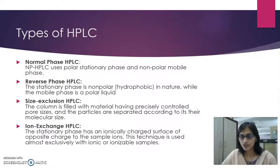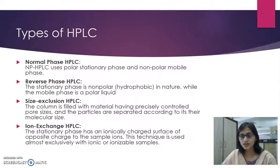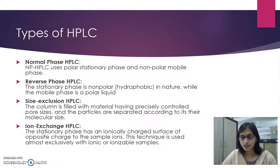In ion exchange HPLC, the stationary phase has an ionically charged surface of opposite charge to the sample ions. This technique is used almost exclusively with ionic or ionizable samples. The stronger the charge on the sample, the stronger it will be attracted to the ionic surface phase and thus the longer it will take to elute. The mobile phase is an aqueous buffer where both pH and ionic strength are used to control elution time.